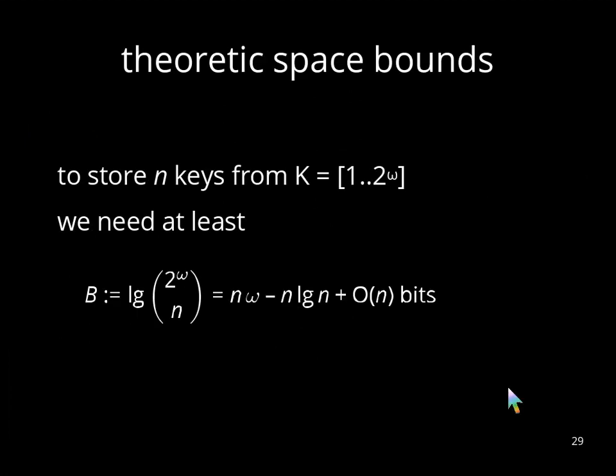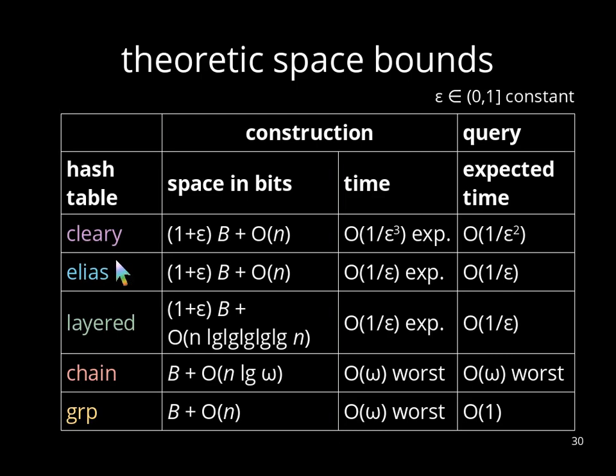For analyzing the space bounds, we use the following known fact that for storing n keys from k, we need at least log n chosen over 2 to the power of omega bits, which gives us this expression, and which we abbreviate as b in the following. Having b, we can now relate our hash tables with the previously explained compact hash tables, namely Cleary, Elias, and layered. Their space bounds are very close to the lower bounds, having only additionally epsilon b bits, where epsilon is a constant between 0 and 1. And layered has additionally small penalty.